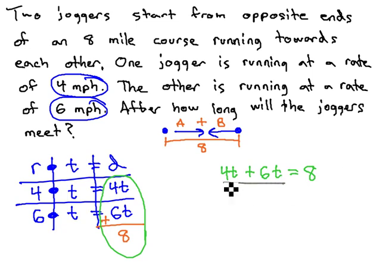This equation we can quickly solve by combining like terms to get 10t equals 8, and finally dividing both sides by 10 to get t is equal to 4 fifths of an hour, or you might say 48 minutes.